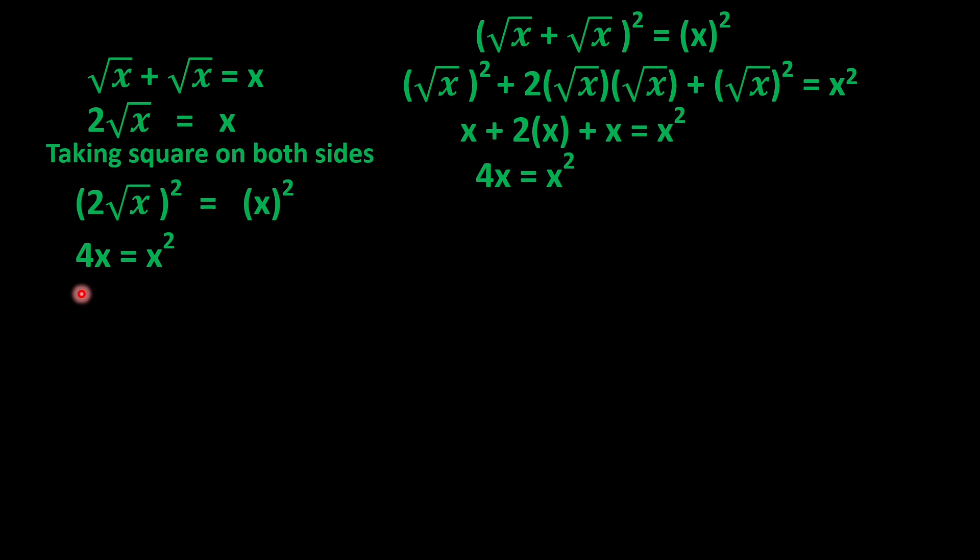Now let's proceed with the question. We will send 4x to the other side of the equation. So x² - 4x = 0. Now take x as common. After taking x common, this becomes x(x - 4) = 0.